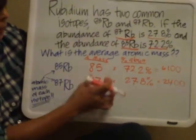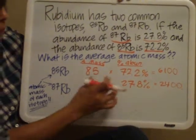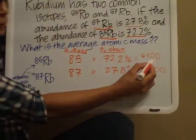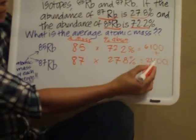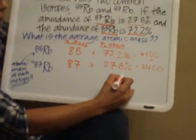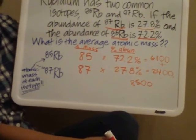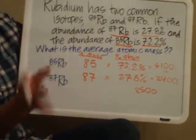Okay. So I've taken the mass of each of the isotopes for rubidium and multiplied them by the percent abundance. And I've gotten these two values. The next thing you do is you add these babies up. So 6,100 plus 2,400 gives you 8,500.